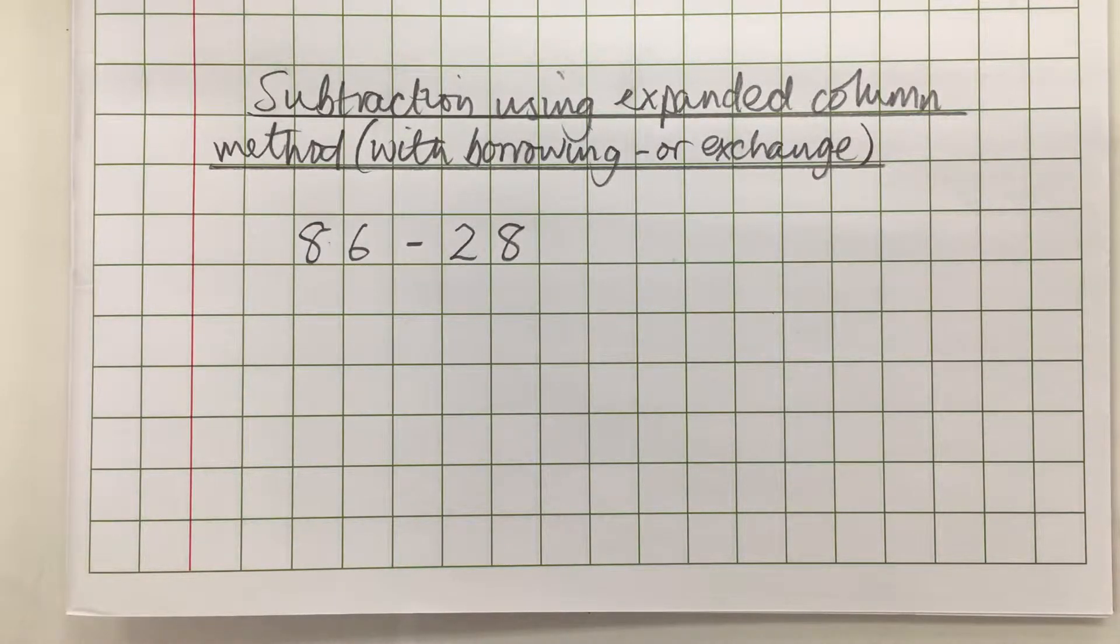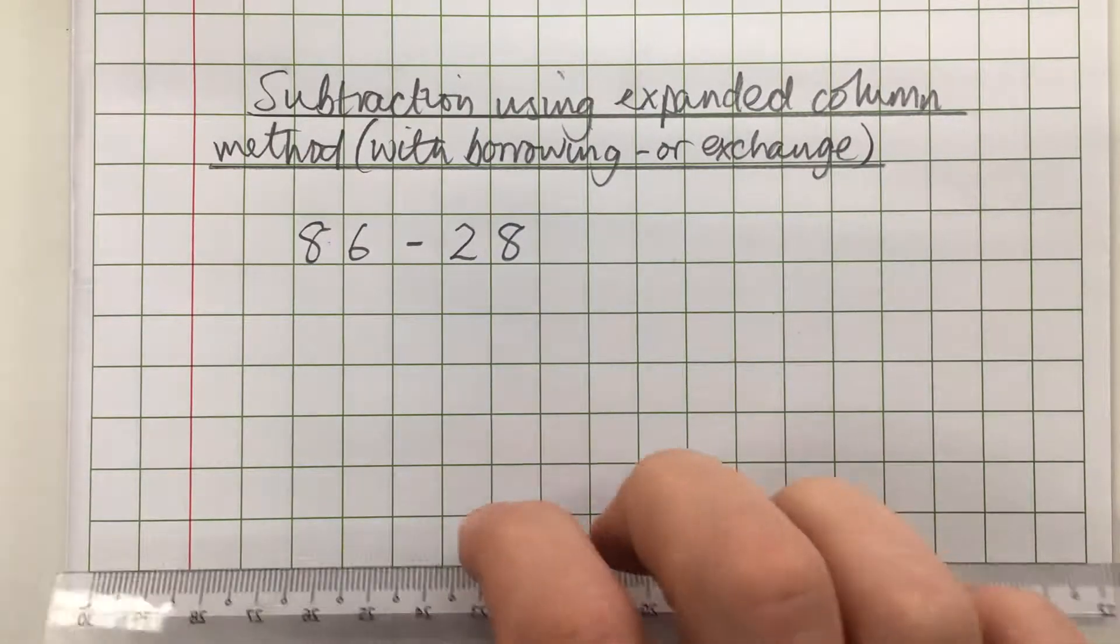In this video I'm going to show you how to subtract using the expanded column method with borrowing. Sometimes borrowing is called exchange, sometimes it's called decomposition, but they all mean the same thing.